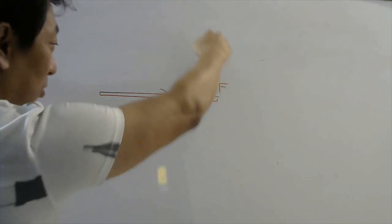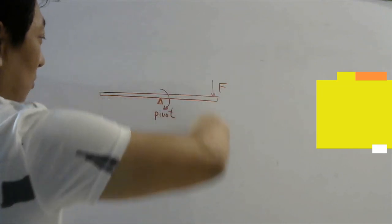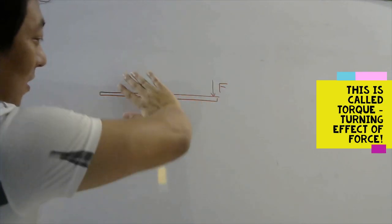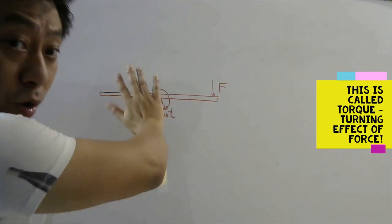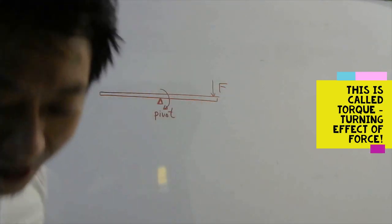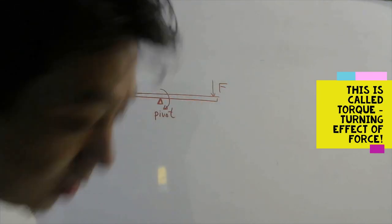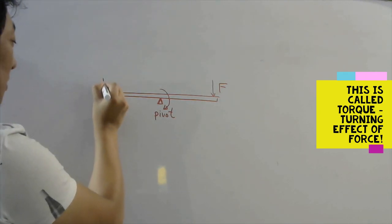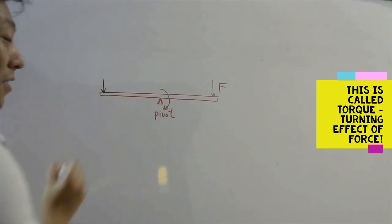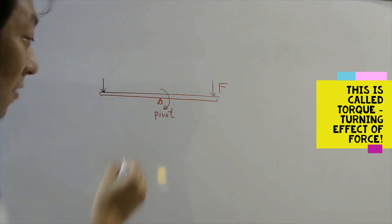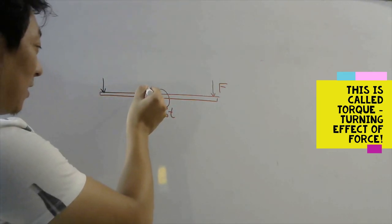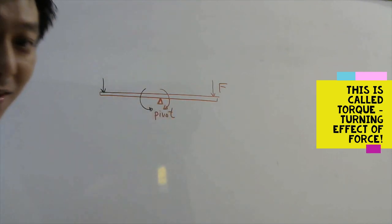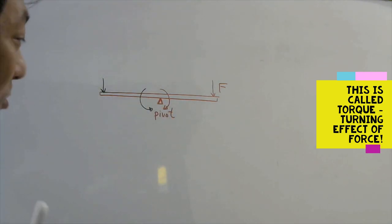If you sit here, your force of gravity will rotate the board — that is your clockwise rotation. What about if you sit on the other side? Your force of gravity will create a rotation in the opposite direction.